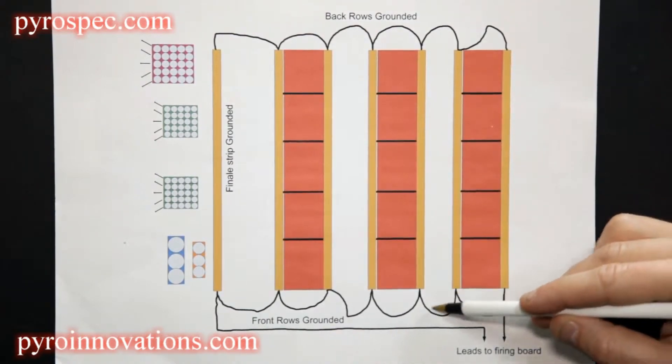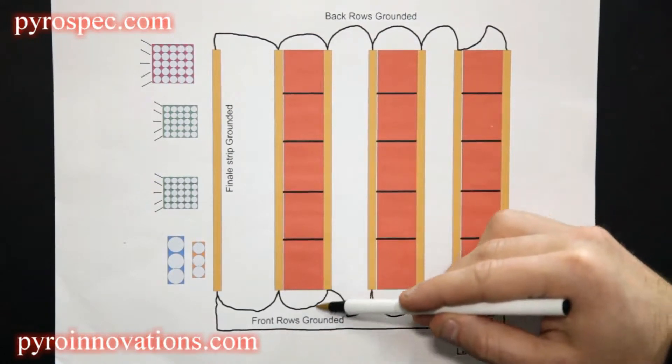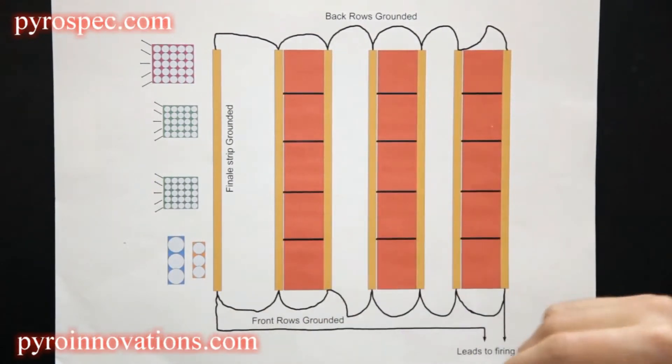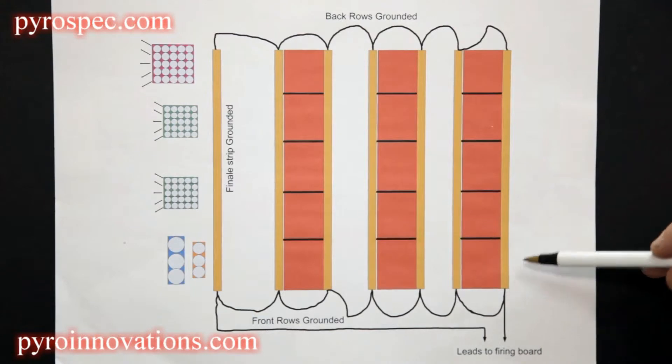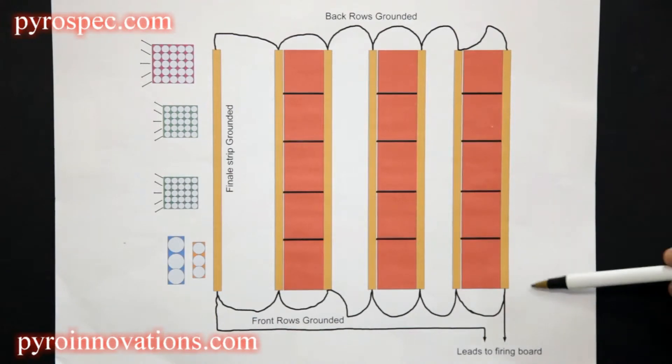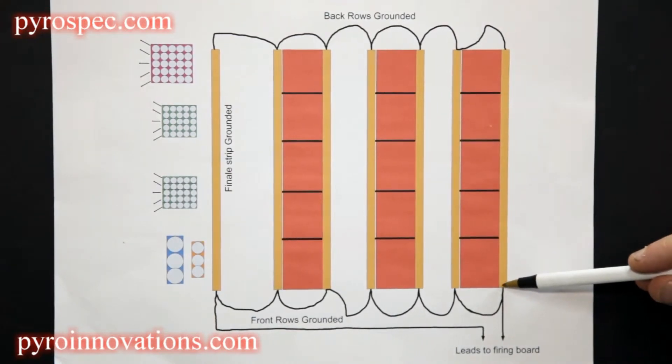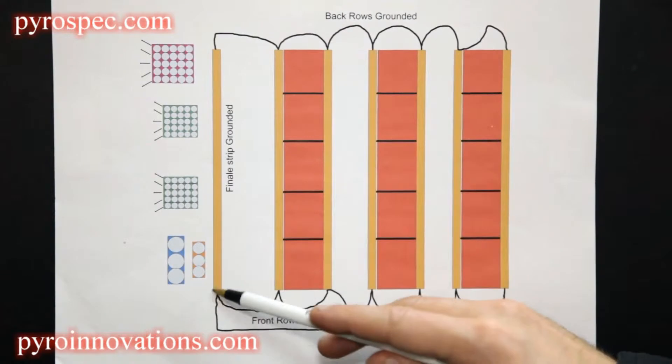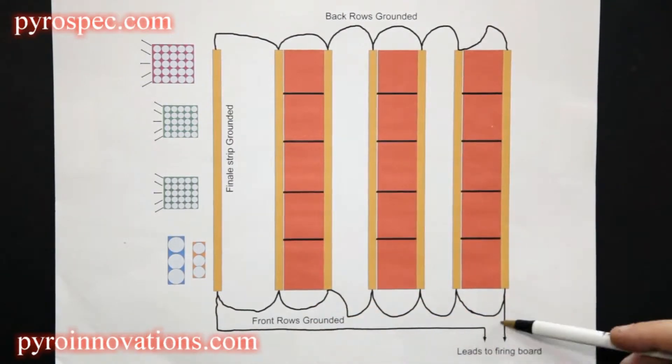Then we're going to run our two home run lines, which are the ground wires that are going to go back to our firing board. We're going to run one from this strip and then we're going to run one from this strip, so we have two home run lines.